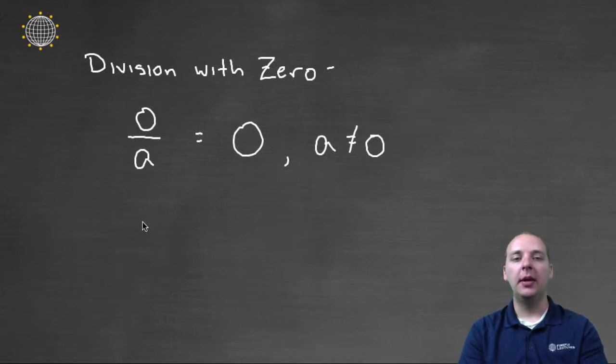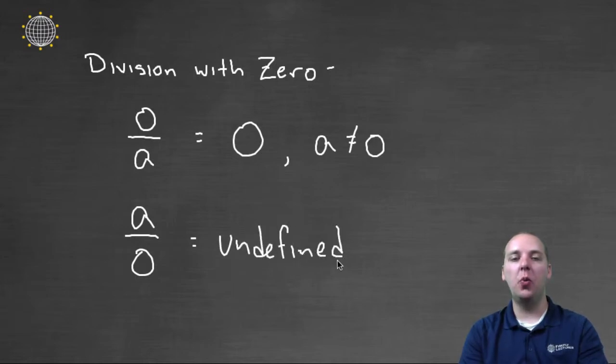Now, on the flip side though, if you had a numerical value that was being divided by zero, this is actually what's called undefined. This is not a meaningful quantity. You cannot take a number and divide it by zero. So there's a difference here. Zero divided by a number is totally fine, totally okay, and you get zero. Dividing a number by zero, on the other hand, is undefined.